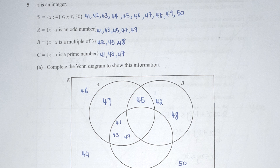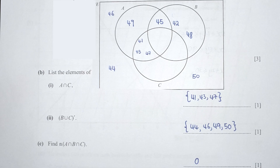After identifying all values, I proceed with filling in the Venn diagram. For A intersect C, listing the elements gives 41, 43, 47 — these repeat across both A and C. For the complement of B union C, we have 44, 46, 49, and 50. For section C, the number of elements in A intersect B intersect C is zero, because there is no overlap between all three sets.